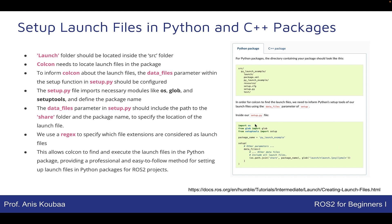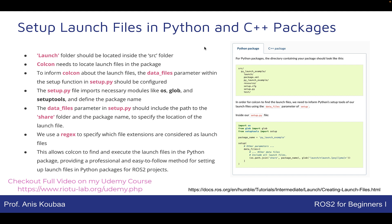Inside setup.py, we define data files as a list. The data_files parameter should include the path to the share folder and the package name to specify the location of the launch file. We also use a regular expression to specify which file extensions are to be considered as launch files — because the extension could be .launch, .launch.py, .launch.xml, or .xml. This allows Colcon to find and execute the launch files in Python packages, providing a professional and easy-to-follow method for setting up Python packages for big ROS2 projects.